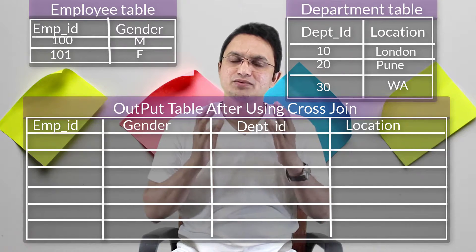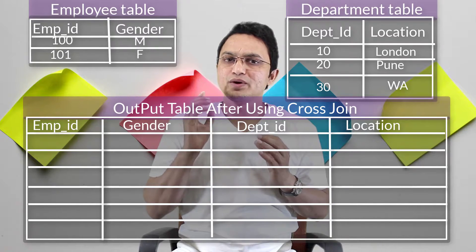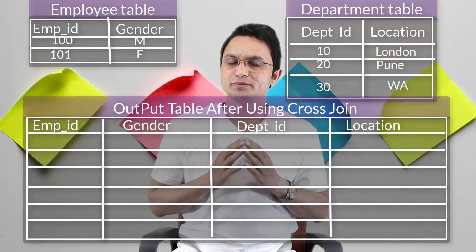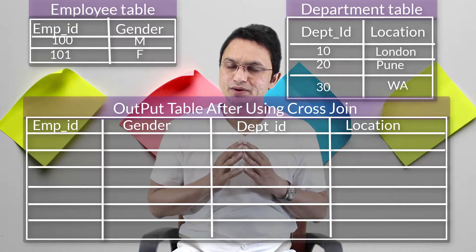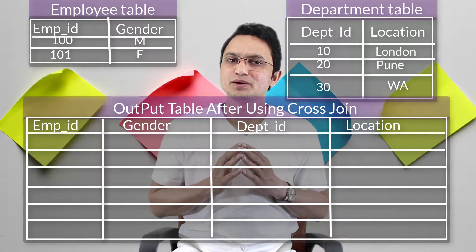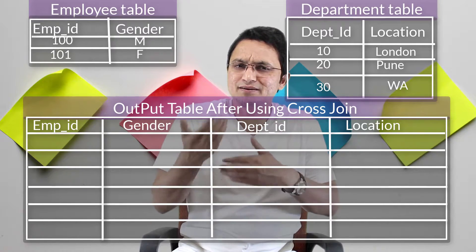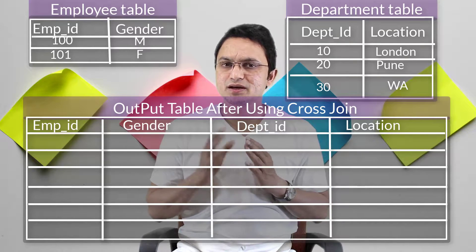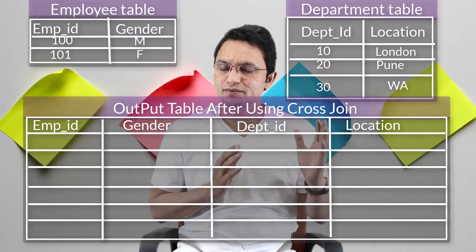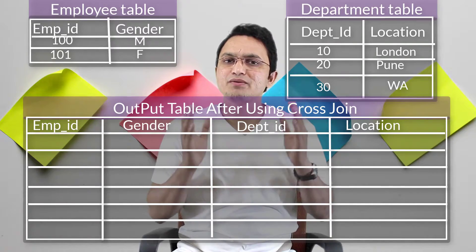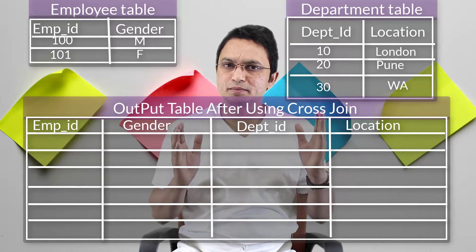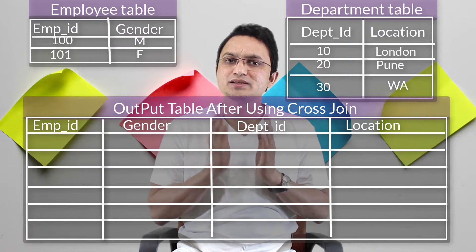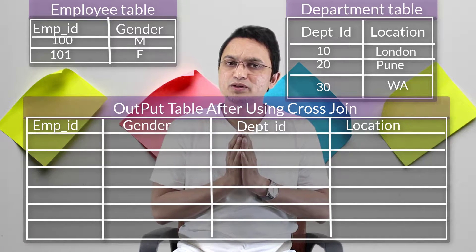Let's understand how exactly this table got formed and how the cross join works internally. As you can see on the screen, I have three tables: the employee table, the department table, and the output table. The output table is currently empty. The employee table has a few rows and so does the department table. When I join both tables, here is what will happen.